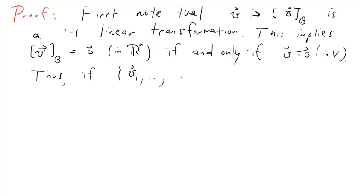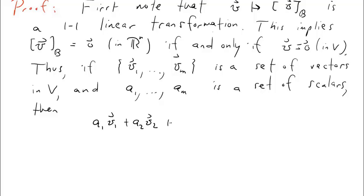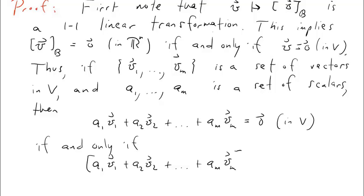Thus, if v1 down to v sub m is a set of vectors in v, and a1 down to a sub m is a set of scalars, then a1 times v1 plus a2 times v2, all the way down to a sub m times vm equals 0 in v, if and only if the coordinate vector corresponding to that sum equals 0 in Rn. Let's label this first equation with a star, because we'll refer back to it later.